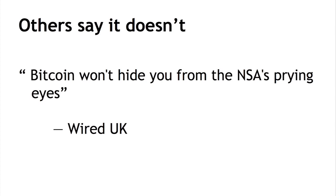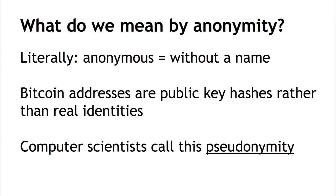How can we resolve this confusion? Let's look at what the word anonymous means. At quite a literal level, anonymous means without a name. In Bitcoin, addresses are public keys — you don't need to put in your real name in order to interact with the system, using public key hashes instead of real identities. But we can interpret this property of being without a name in two different ways: interacting without your real name, or interacting without any name at all.